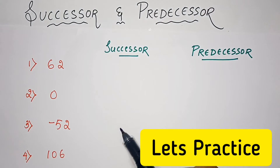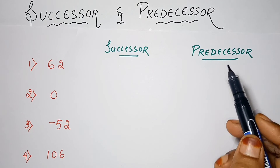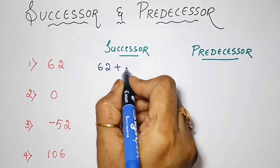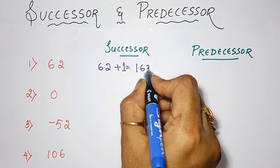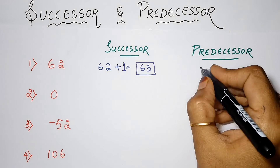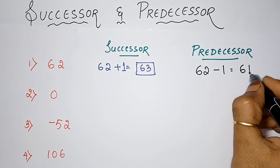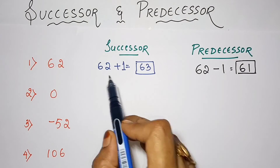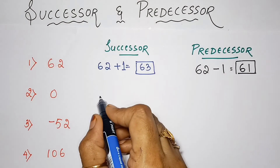We all know: to find successor of a number we have to add 1, and for predecessor of a number we have to subtract 1. So successor of 62 will be 62 plus 1 which is equals to 63, and predecessor of 62 will be 62 minus 1 equals to 61.